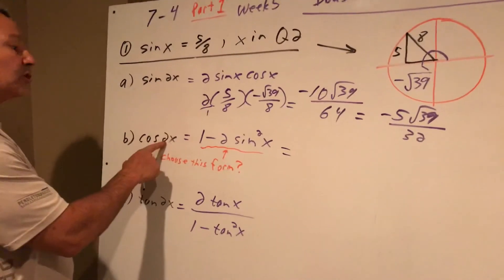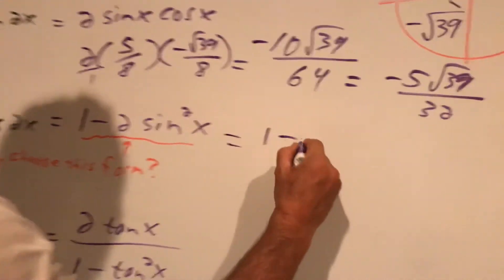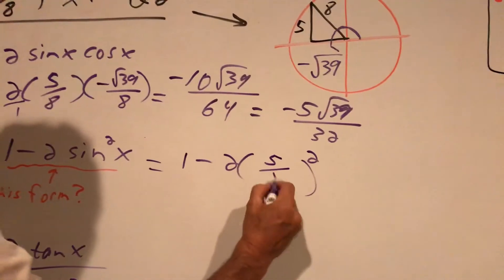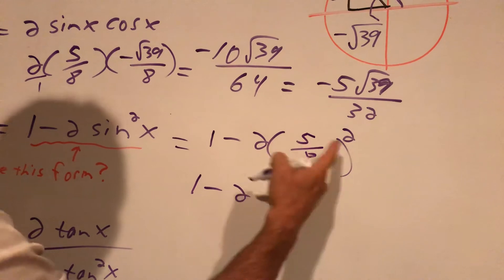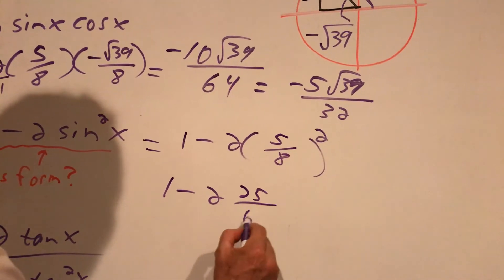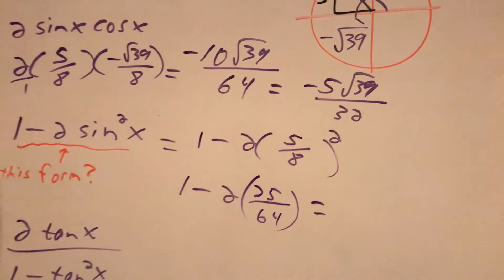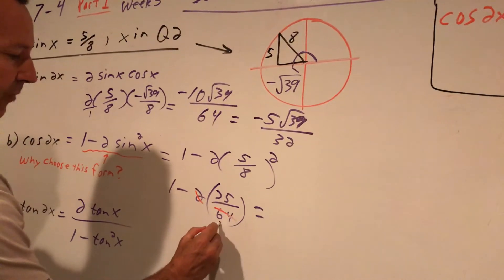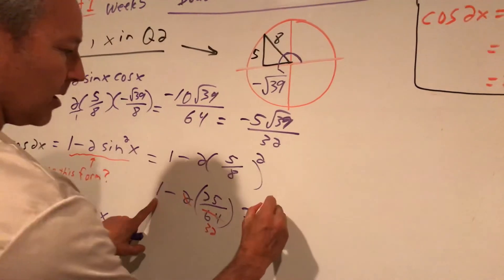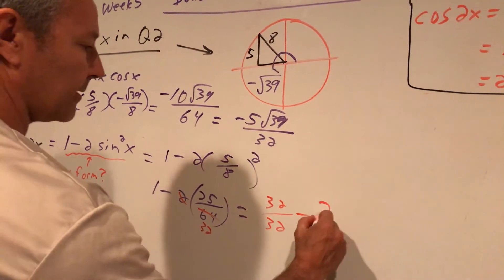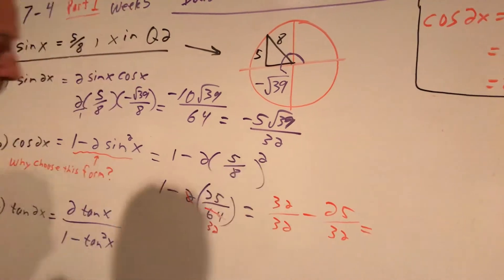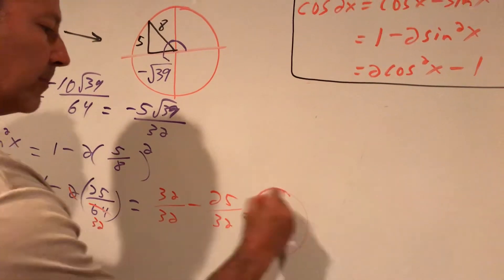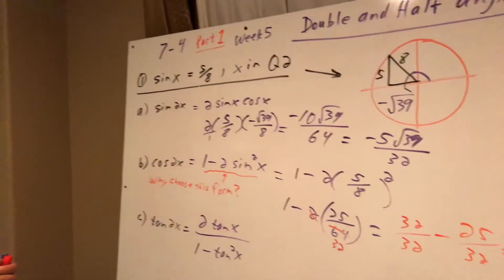So cosine of 2 times the angle equals 1 minus 2 times sine squared. Well, sine of the angle they gave me was 5 over 8. This will be 1 minus 2. We square this before we multiply, 25 over 64. I'm going to cancel my 2 with my 64. That will be 32. This one will become 32 over 32, making a common denominator, minus 25 over 32. And 32 minus 25 is 7. So the answer is 7 over 32, and it's a positive value, which it would be.